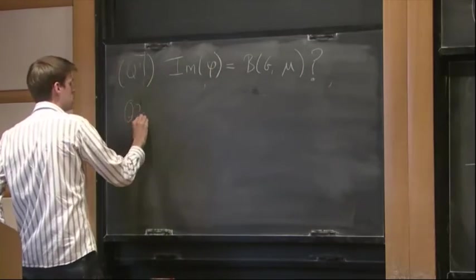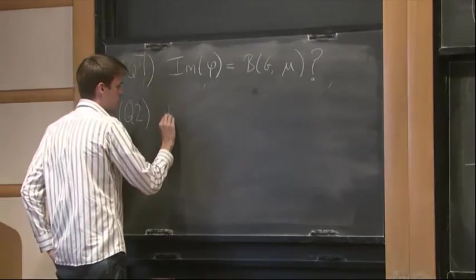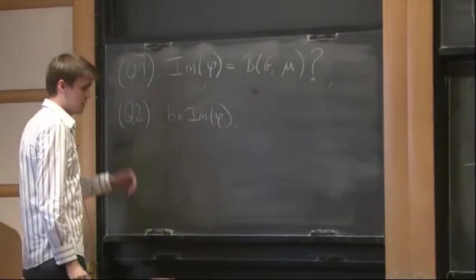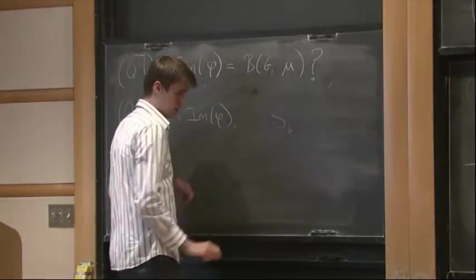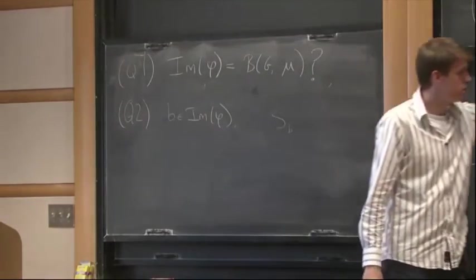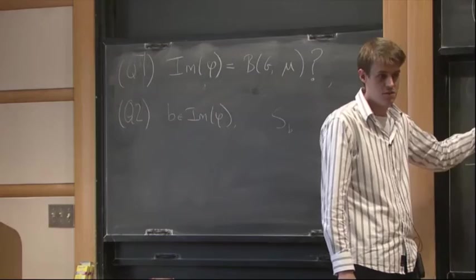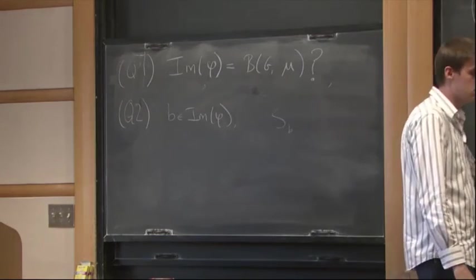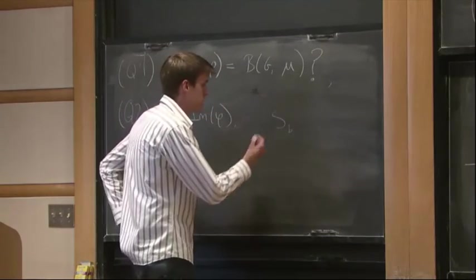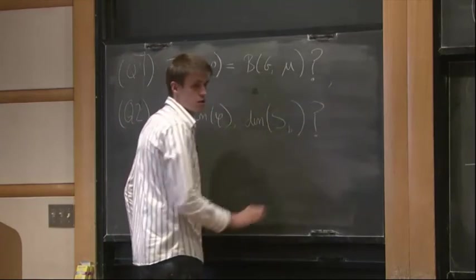So the second question. So suppose that you have some isocrystals inside the image. And you look at the fibers, so the corresponding Newton strata. So I didn't say this when I wrote this down. But these Newton strata, they themselves, they are varieties. So here I just introduced them as a set. But in fact, they are locally closed. And so you can ask questions about them as a variety. So in particular, I can ask what is the dimension of this variety.